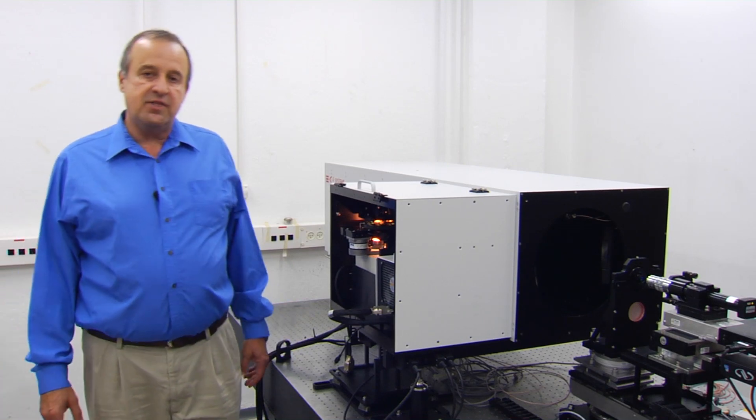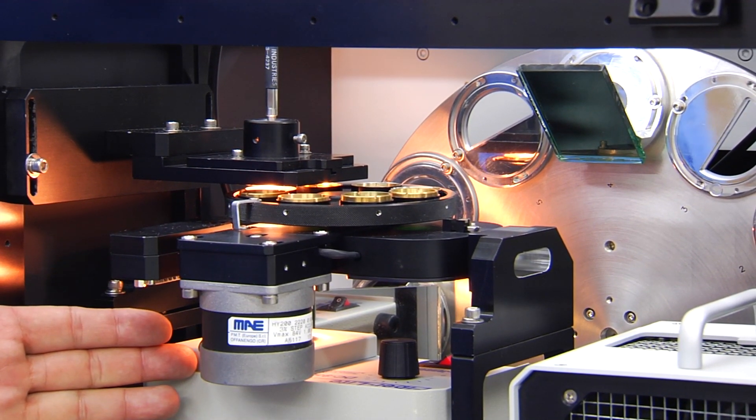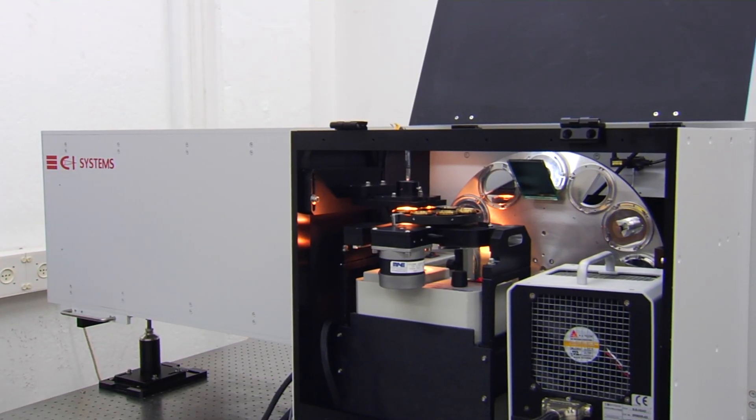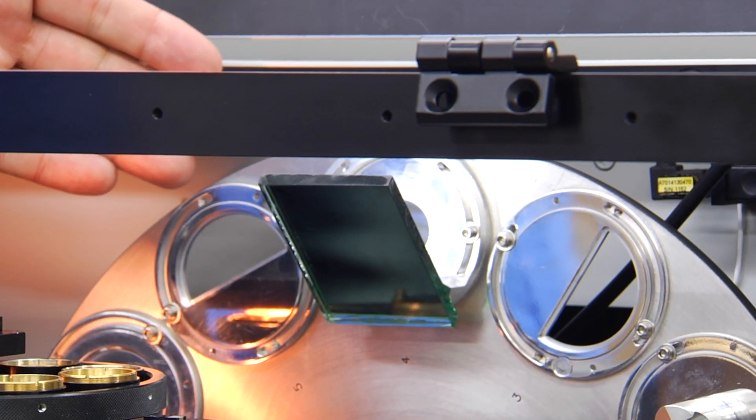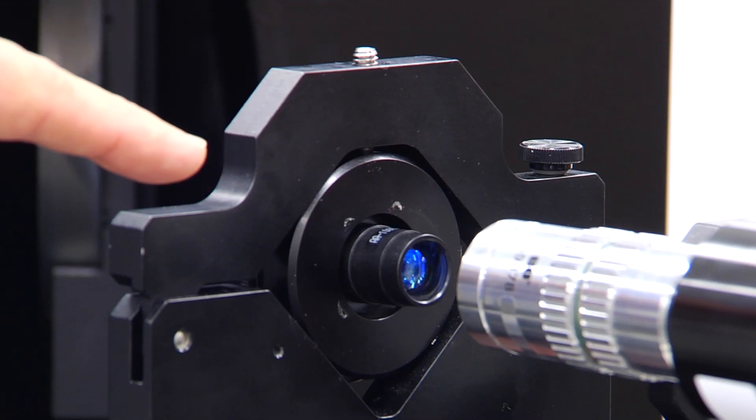As always, these systems are built up of three major units: source area, the collimator which is imitating infinity, the target wheel which includes all the resolution targets, and the unit under test area.